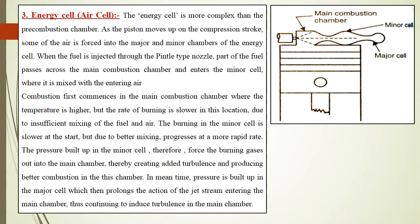Next is the energy cell, also known as the air cell. The energy cell is more complex than the pre-combustion chamber in terms of construction — a very precise design is needed for these additional divided chambers. As the piston moves up during the compression stroke from BDC to TDC, some of the air is forced into the major and minor cells of the energy cell.